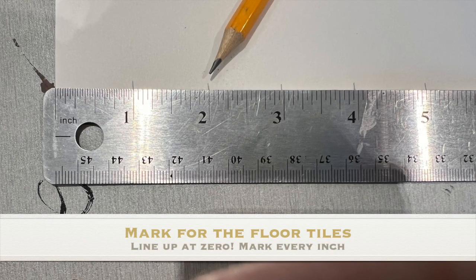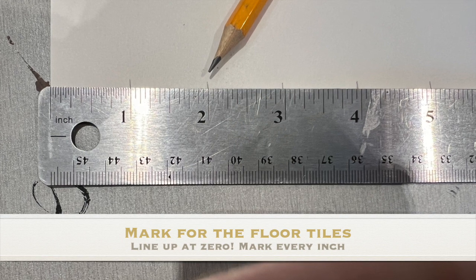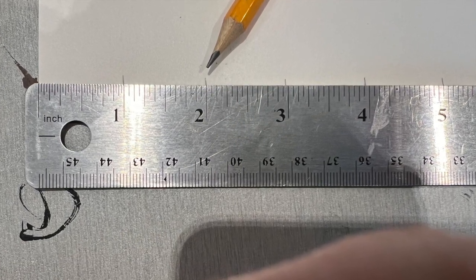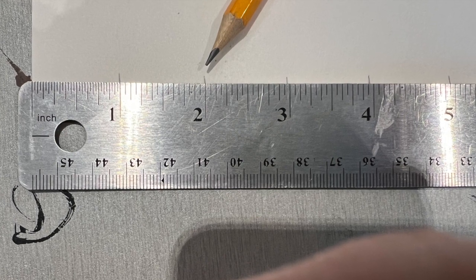At the bottom of your paper you are going to mark every inch. Be sure that you line up your ruler at zero and that you're using the inches and not centimeters. This is going to be our floor tiles.